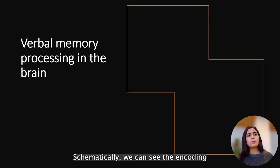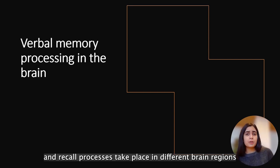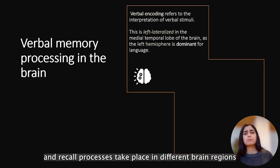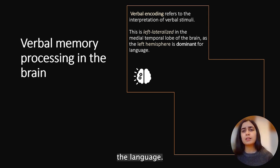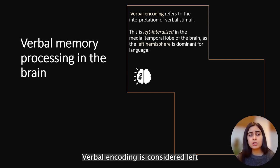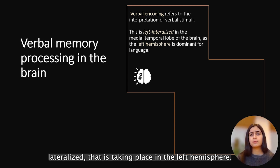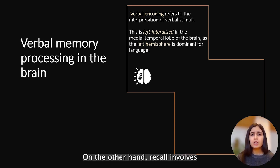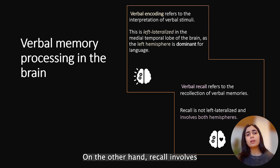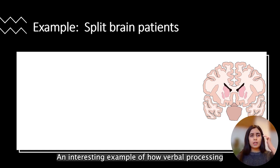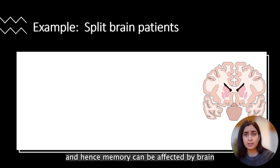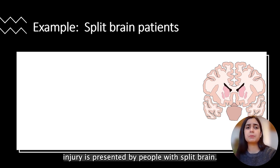Schematically, we can say that encoding and recall processes take place in different brain regions. Since the left hemisphere of the brain is dominant for understanding language, verbal encoding is considered left lateralized — that is, taking place in the left hemisphere. On the other hand, recall involves both hemispheres of the brain. An interesting example of how verbally processed memory can be affected by brain injury is presented by people with split brain.